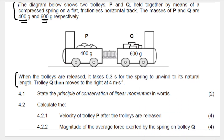Continuing to read: when the trolleys are released — they are held together by a spring — it takes 0.3 seconds for the spring to unwind to its natural length. Trolley Q then moves to the right at 4 meters per second. A few things to note: we need to convert the mass, they are giving us time, and the first question asks us to state the principle of conservation of linear momentum.